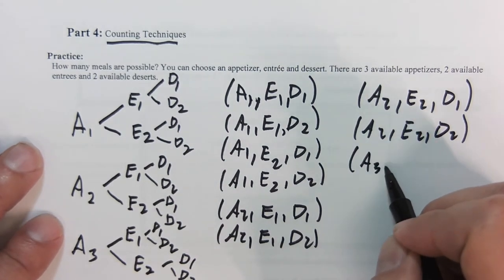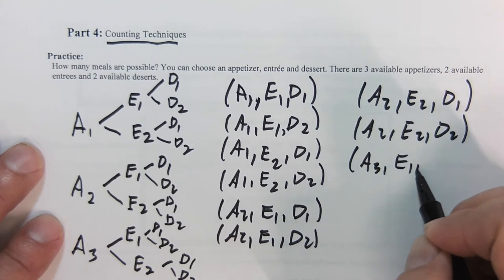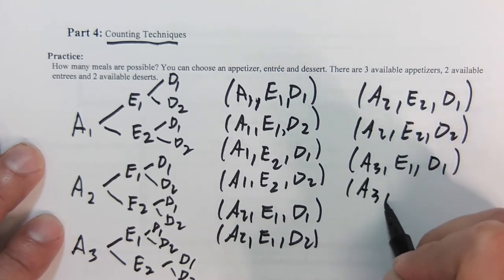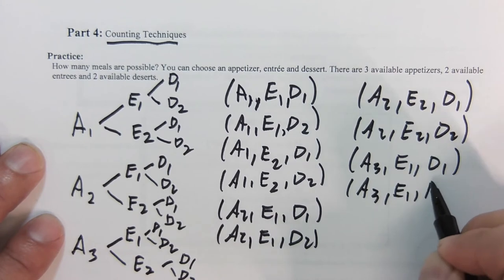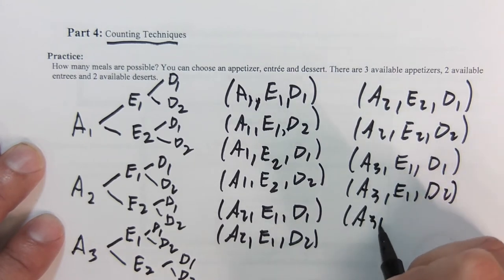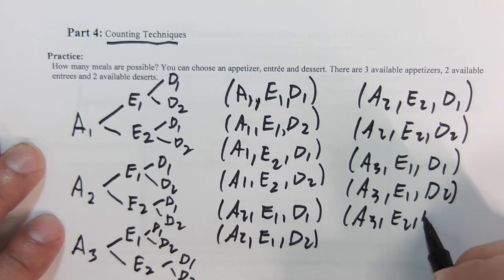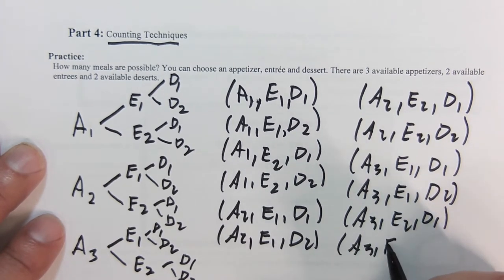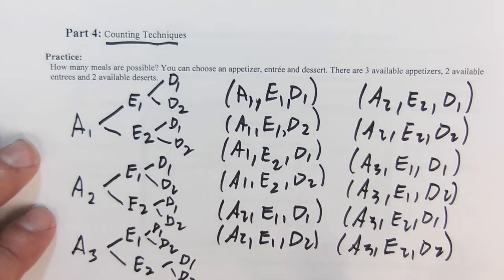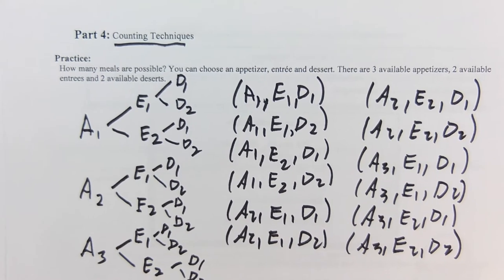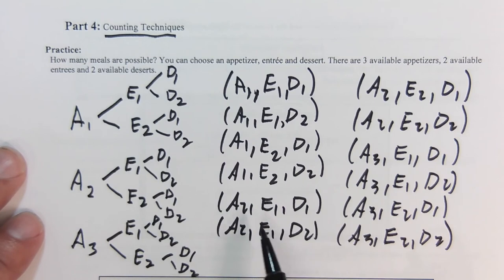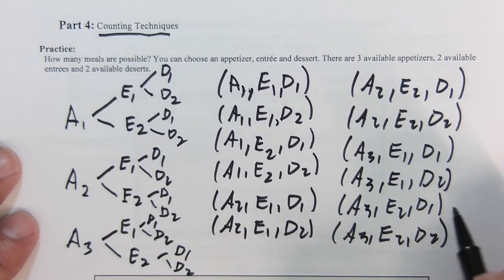Appetizer two, entree one, dessert one. Appetizer three, entree one, dessert one. Appetizer three, entree one, dessert two. This is my entire sample space for this particular scenario. This is everything. I want to know how many we have here. We have six here and six here, a total of 12 meals.